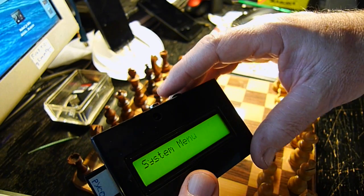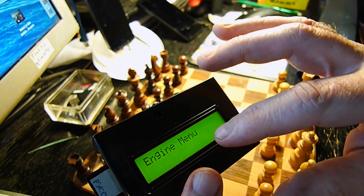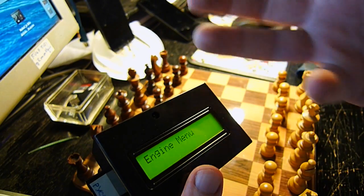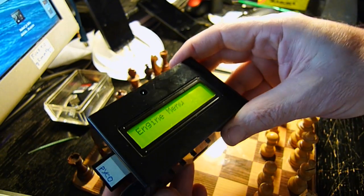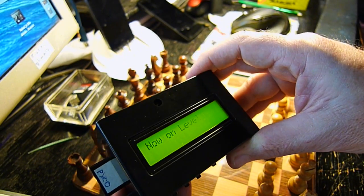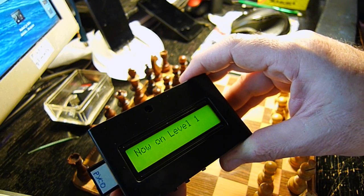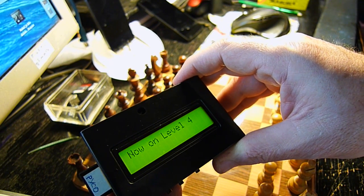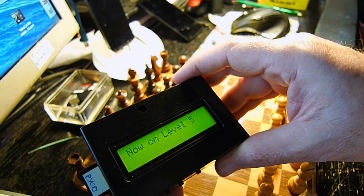But first, let's go back to the engine menu and set up a level of play first. This is done via buttons, like so. Okay, level one, level two, level three. Okay, let's have level five.